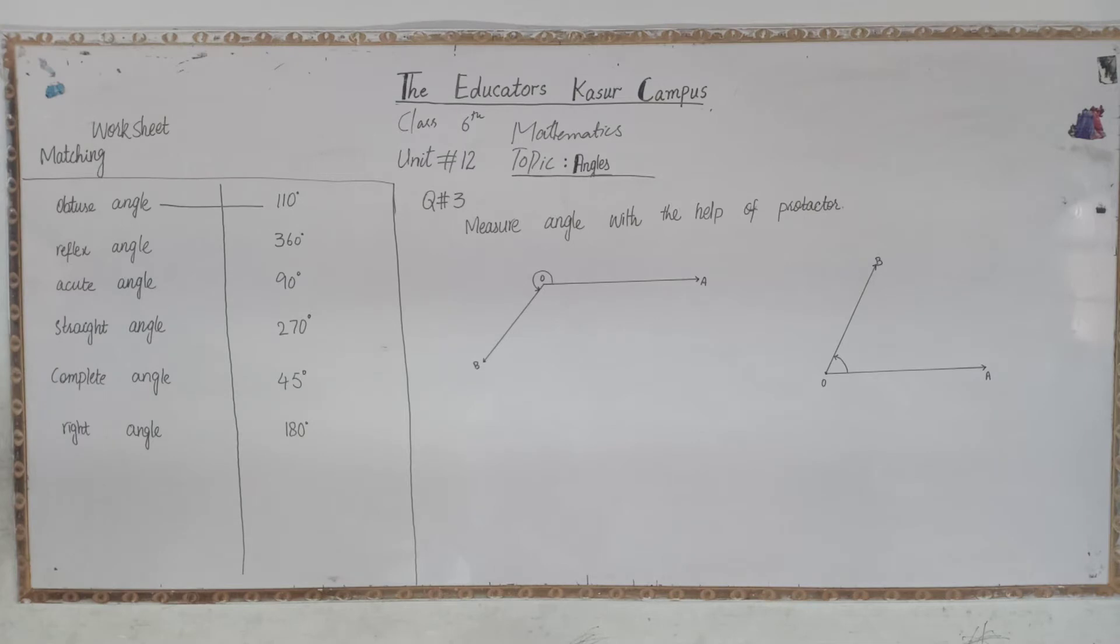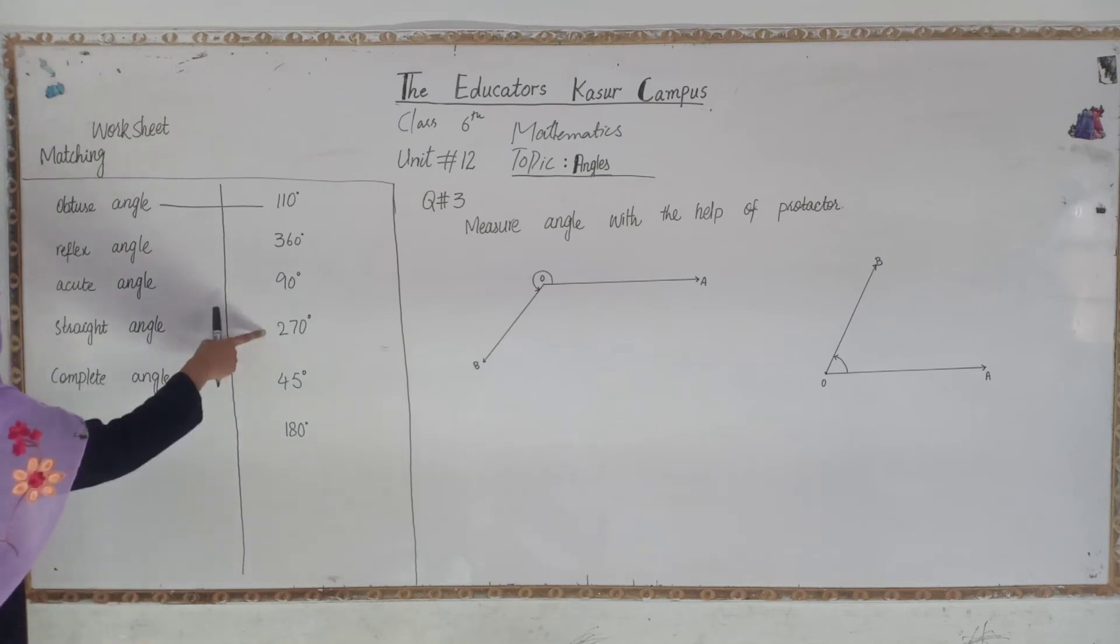Next is the reflex angle. Reflex angle definition: such angles are greater than 180 degrees and smaller than 360 degrees. We are talking about reflex angle, so let's see which option is greater than 180 degrees. I think this is the right option. Reflex angle is equal to 270 degrees.